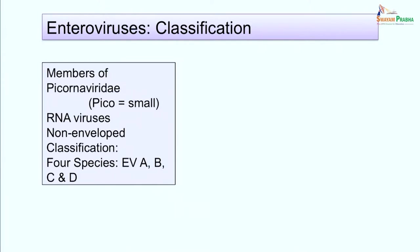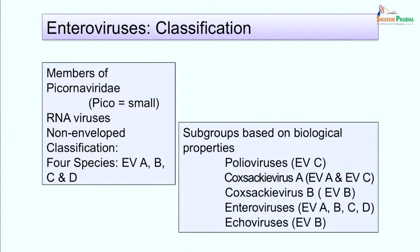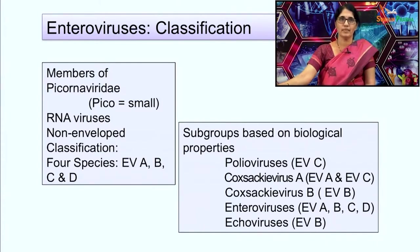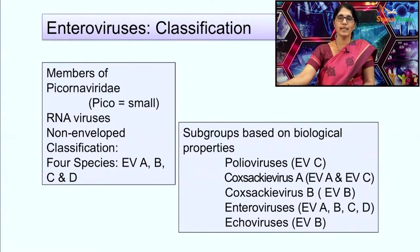These enteroviruses belong to the family Picornaviridae — 'pico' means small — so these are small RNA viruses with a single-stranded RNA molecule. They are non-enveloped viruses. There are 4 important species of enteroviruses: A, B, C, and D. The enteroviruses involved in acute flaccid paralysis are polioviruses (enterovirus species C), Coxsackie virus A (species A and C), Coxsackie virus B (species B), and echoviruses (species B).